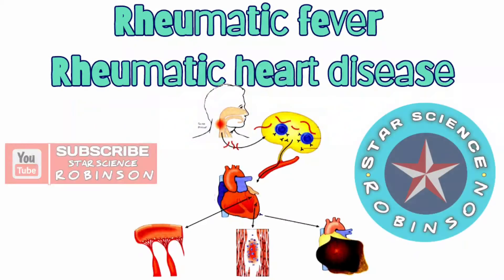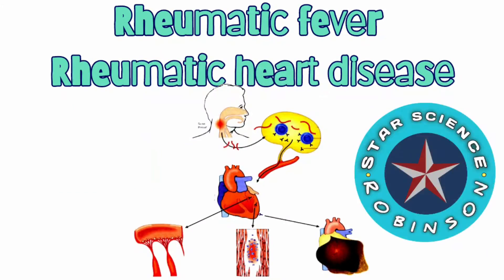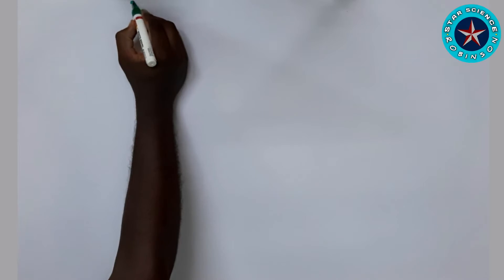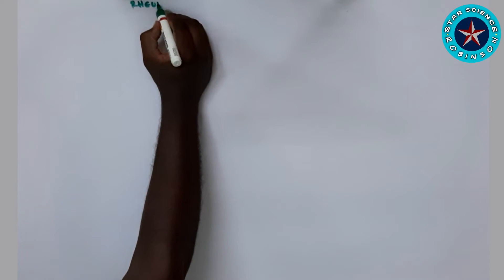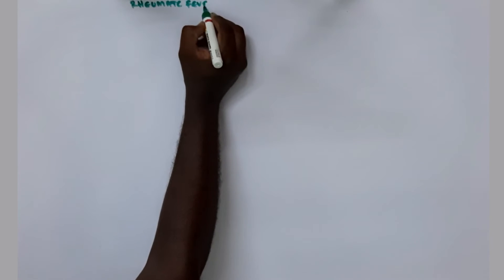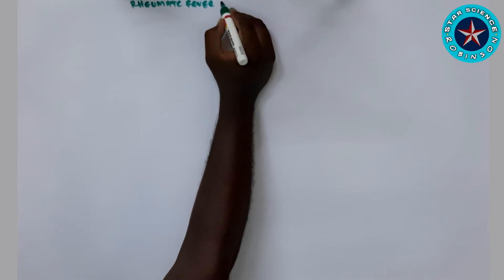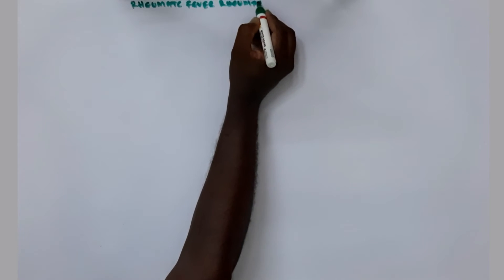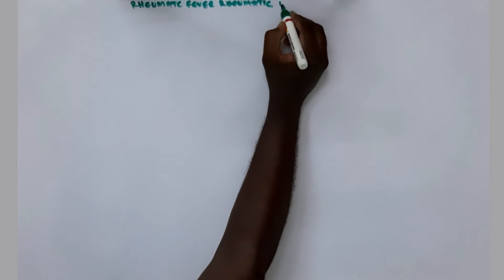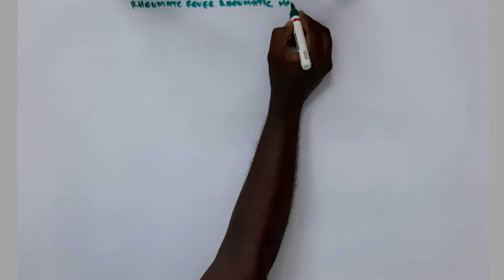Welcome to our YouTube channel Star Science Robinson. Today we are going to deal with rheumatic fever and rheumatic heart disease. Rheumatic fever is a type of acquired heart disease. It is an inflammatory lesion affecting the heart, blood vessels, joints, and connecting tissues.